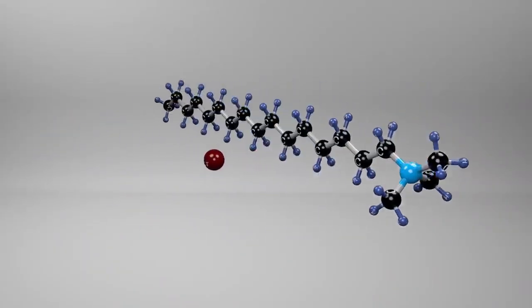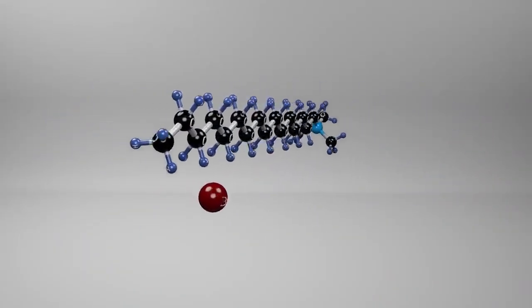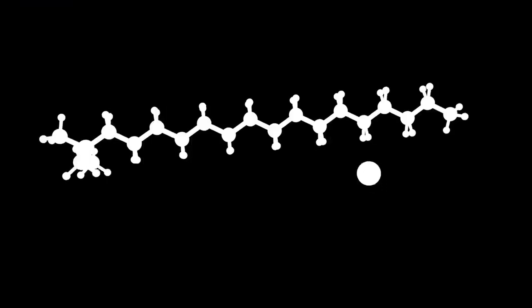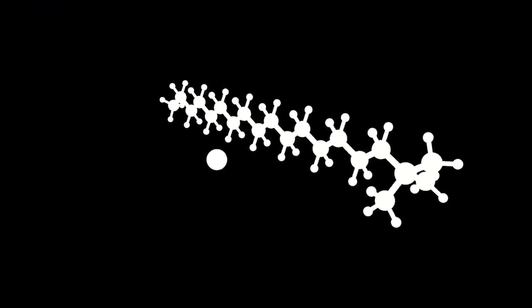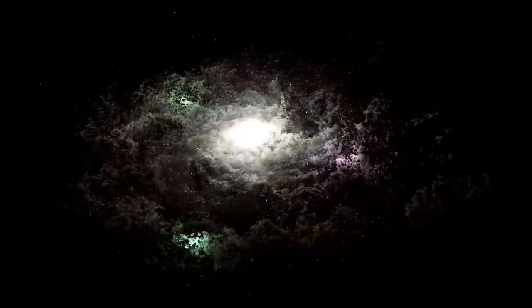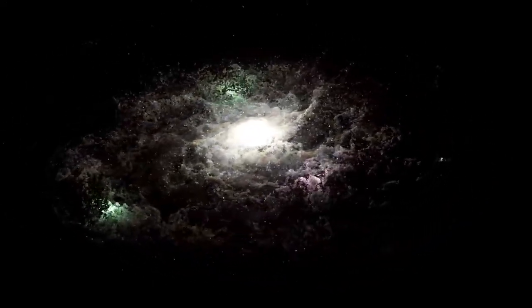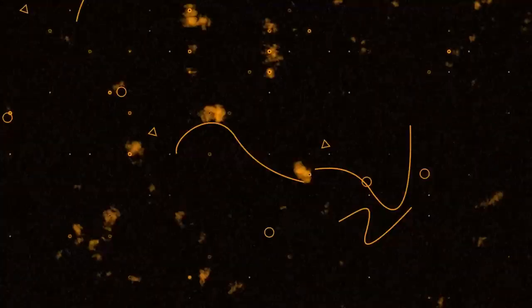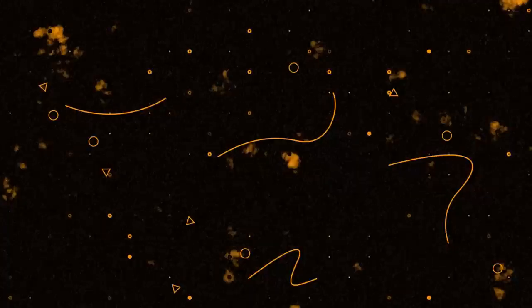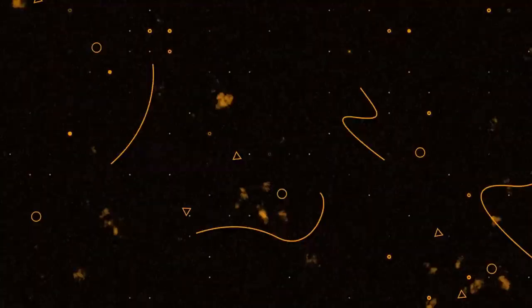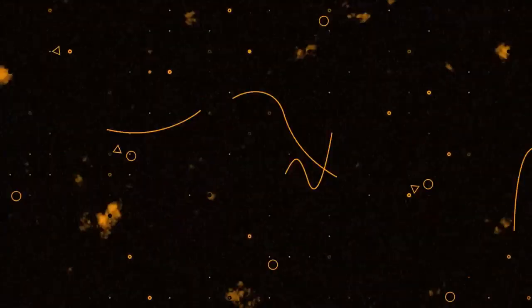Binding the universe together are cosmic filaments, enormous threads of gas, dust, and dark matter that stretch across billions of light-years. These filaments form a web-like structure that links galaxies and clusters into an intricate cosmic network. The universe's matter is not evenly distributed. Instead, it forms this delicate web of filaments and nodes, where gravity gathers galaxies together.